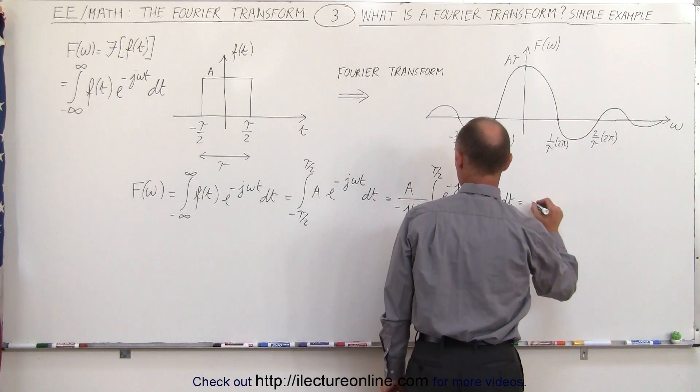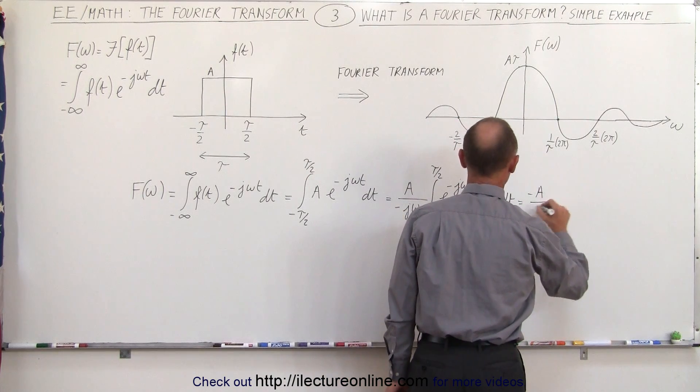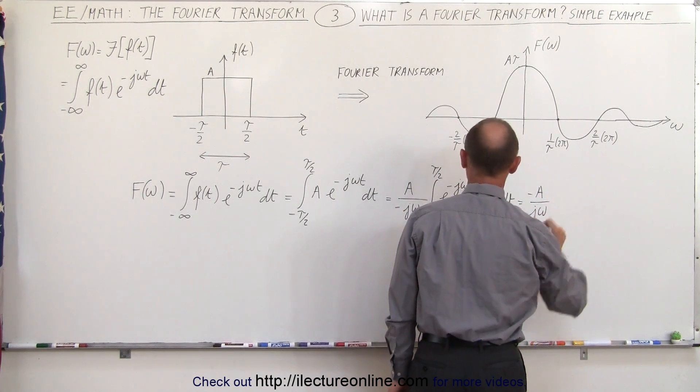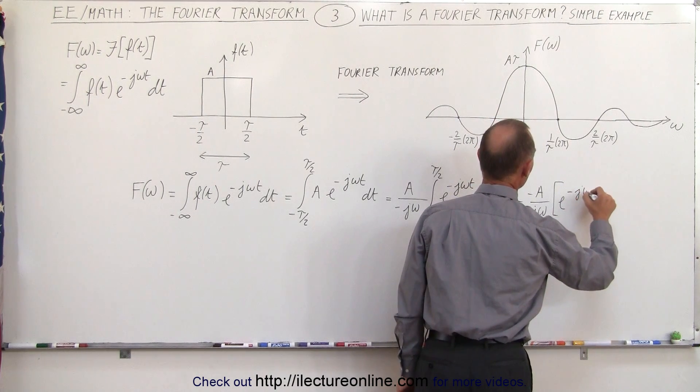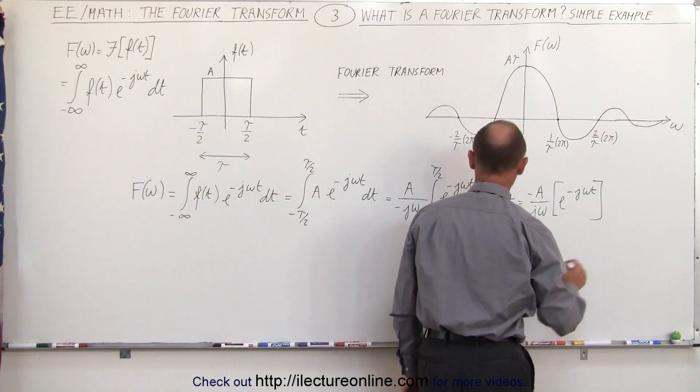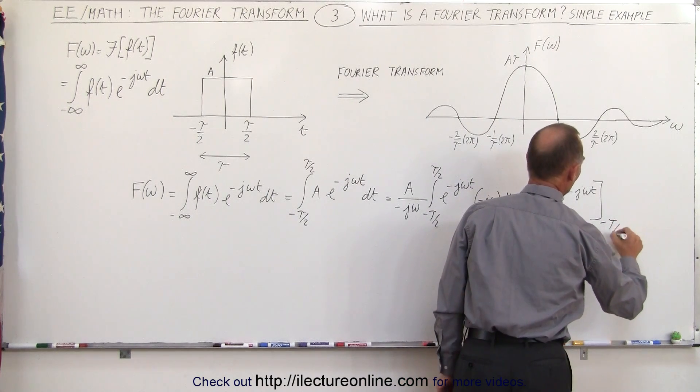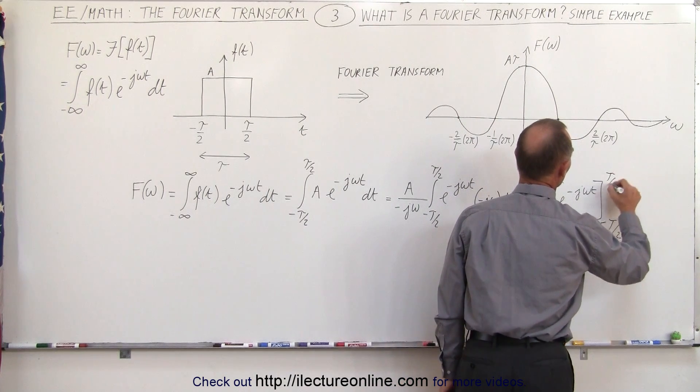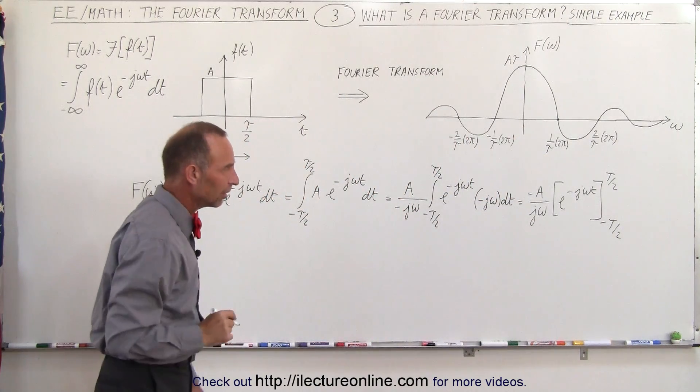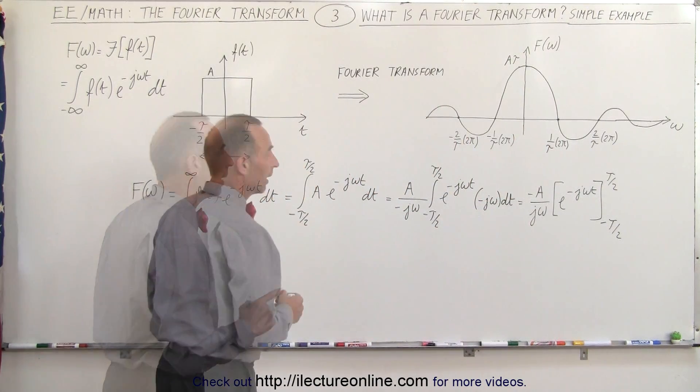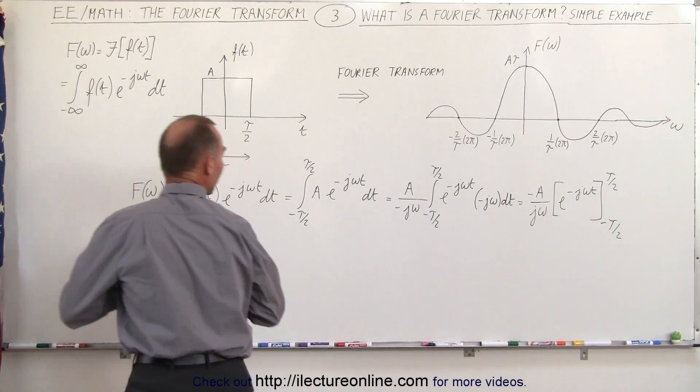So this becomes equal to minus A divided by j omega times e to the minus j omega t evaluated from minus tau over 2 to tau over 2. Alright, looks like a mess but you'll see that it's going to get better. Now let's plug in the limits and see what we get.